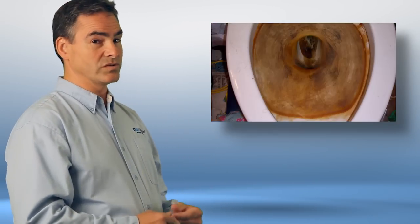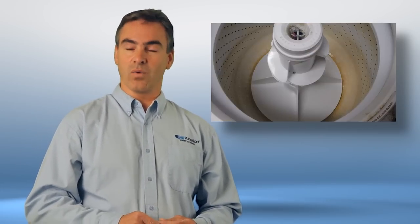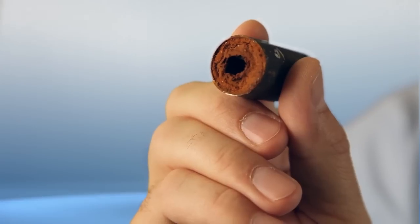The iron shows up as orange or brown stains on your fixtures, sinks, bathtubs, and water-using appliances, like this nasty shower head. And it's murder on your pipes. Nasty stuff.